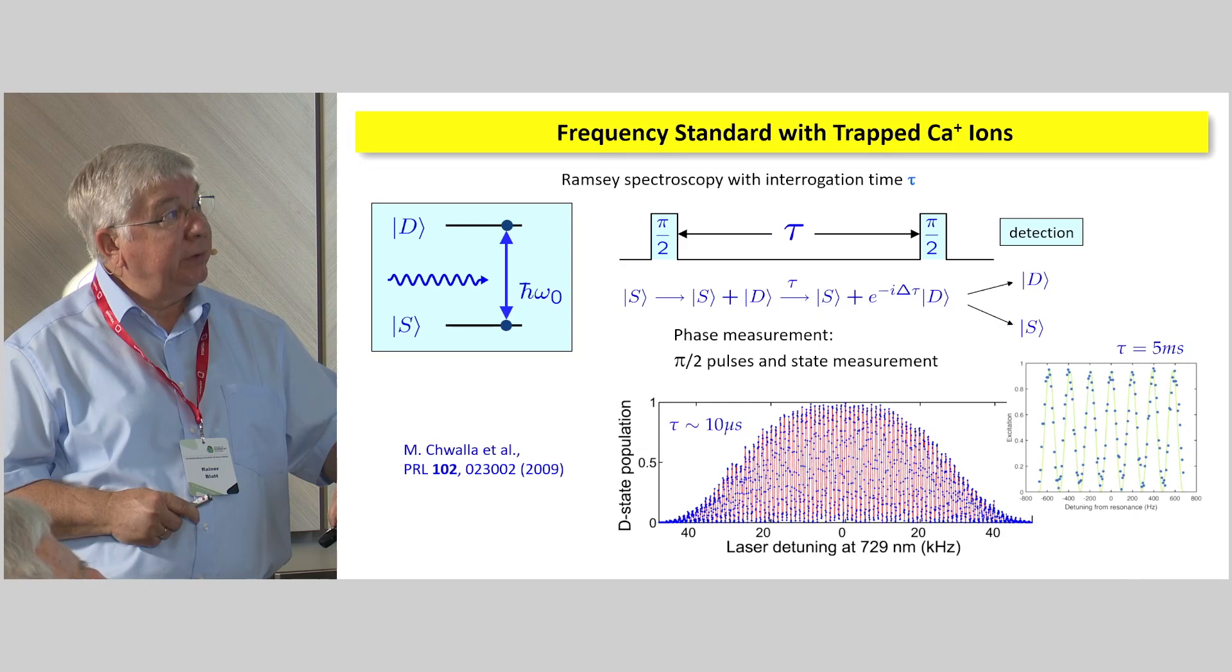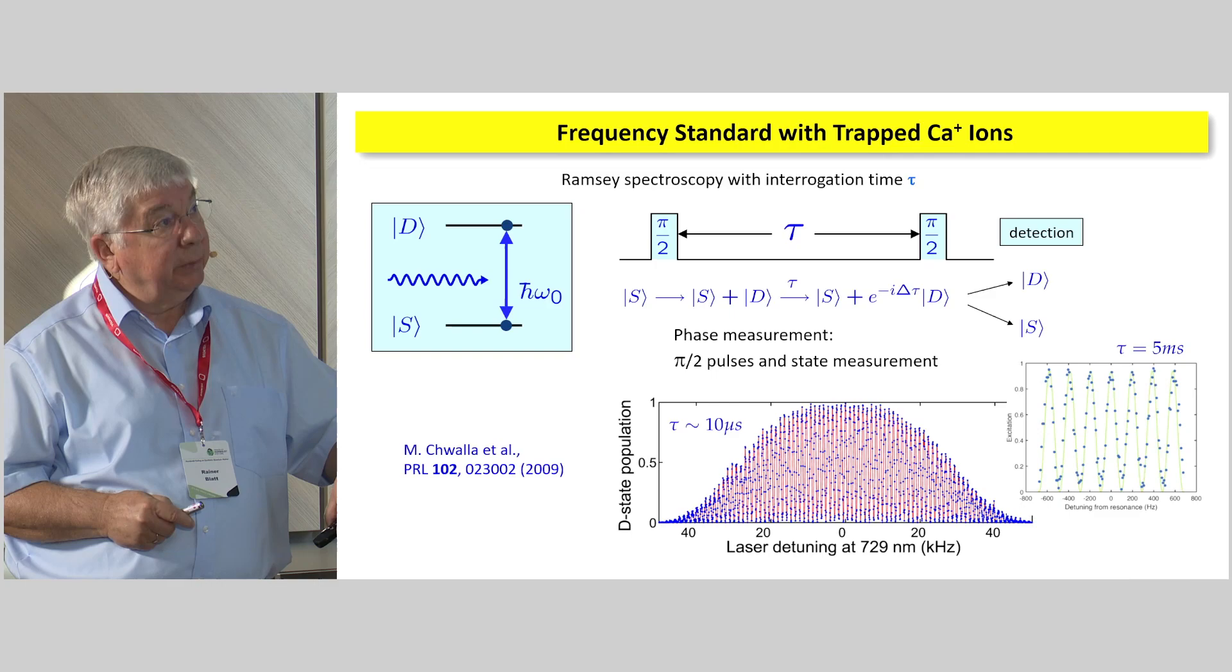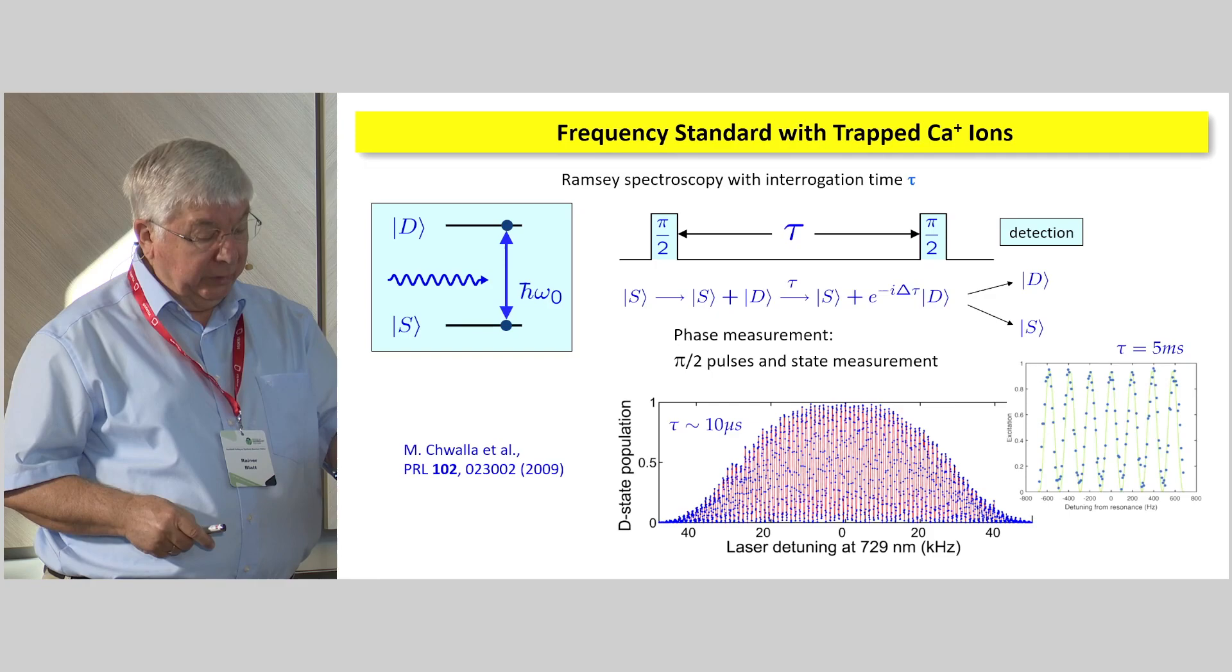And you usually take Ramsey spectroscopy. We saw that yesterday already. And then we just make another pi/2 pulse right here. And then we get the phase evolution. This is a typical picture that you get from such a measurement. Or when you close in, you see just right here, the center line. And so these measurements were done, of course, routinely in our lab. And we have also used them for frequency standards.